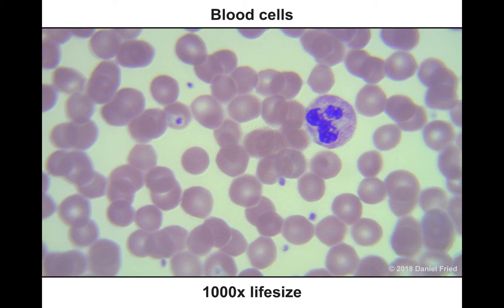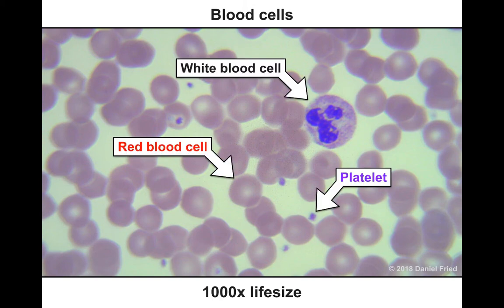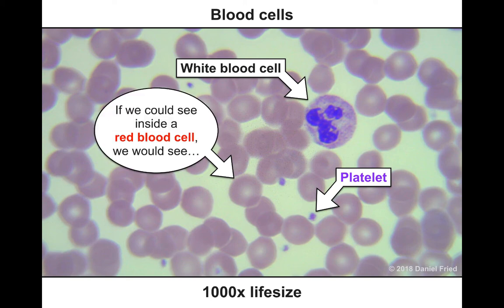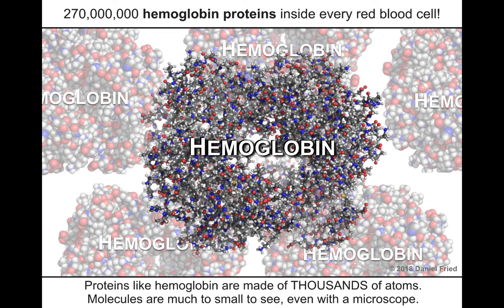We're going to label what some of these cells are. The red blood cells look like little jelly donuts. The white blood cells, because of a stain that was added, actually look purple. They're few and far between. Then there are also the platelets — little purple fragments responsible for clotting. These are the three major kinds of blood cells. What if we could zoom into a red blood cell and look at the hemoglobin? If we could see inside a red blood cell, it would be chock full of hemoglobin proteins — over one quarter billion hemoglobin proteins inside every red blood cell. That shows you just how small even a very large protein is.